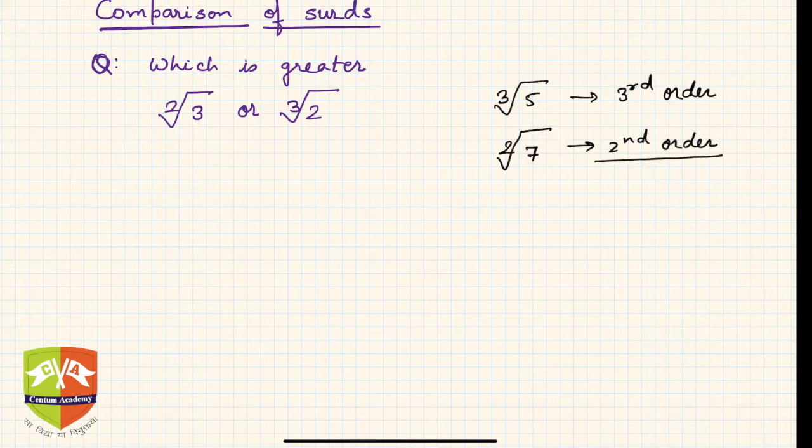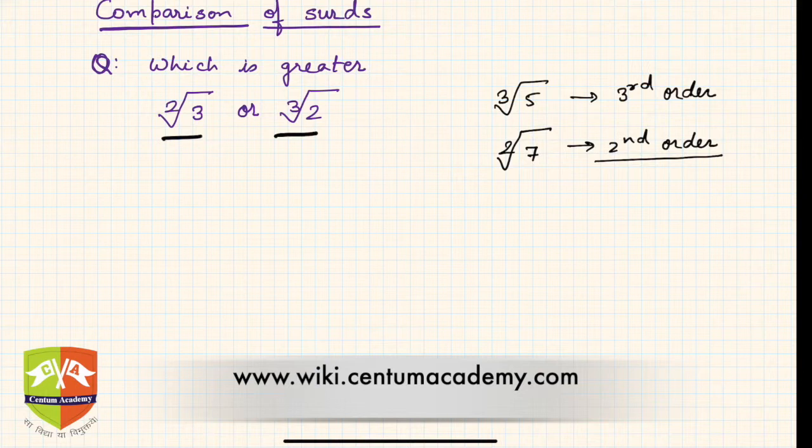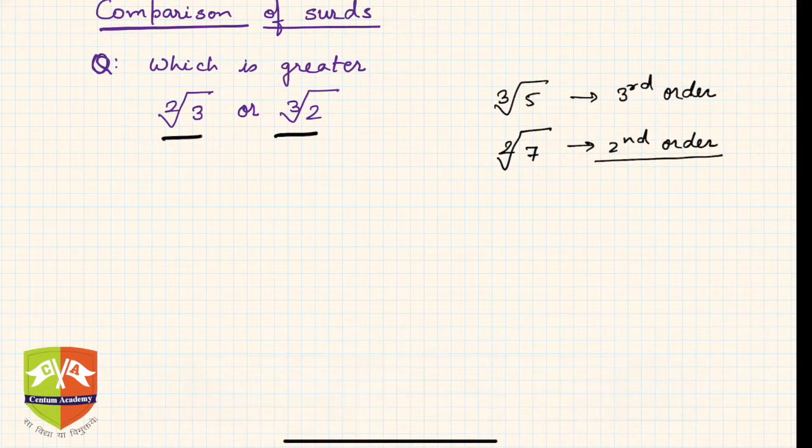The question is how do we compare two given surds? If someone asks which is greater, square root of 3 or cube root of 2, how to solve such questions? To understand which one is more or less, the first thing you need to do is convert them into the same order.